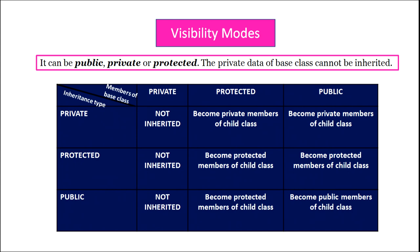In public inheritance or public visibility mode, the private members of the base class are not inherited. The protected members of the base class become protected members of the child class, and the public members of the base class become public members of the child class.